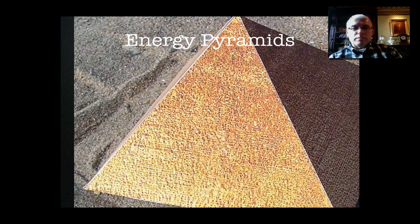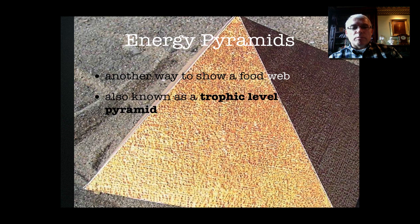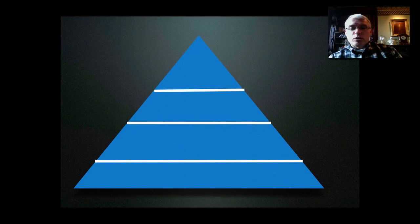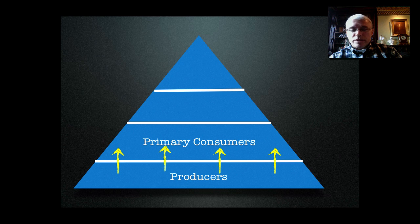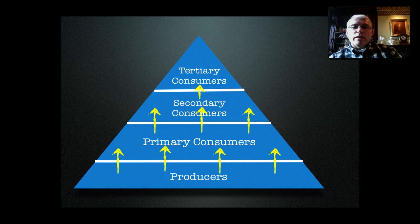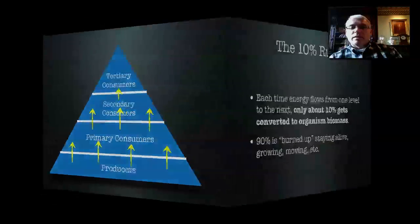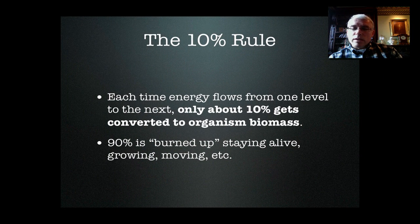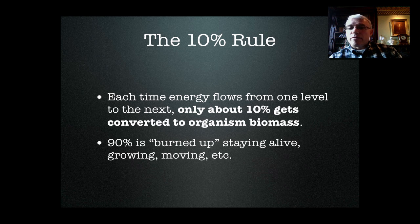Another way to understand food webs is using something called energy pyramids, or trophic-level pyramids. Trophic-level pyramids have a shape — they're pointy at the top and wide at the base, just like a real pyramid. You put the producers at the bottom, and above them you place the consumers. The arrows show how energy passes up from the bottom toward the top. As you move closer to the top, there's less and less volume in the pyramid, and there's a reason for that: it's the 10% rule. Each time energy flows up from one level to the next, about 90% of it is lost and only about 10% gets passed on. The 90% that isn't passed up is used to keep the animals alive — to grow, move, and do all those things.